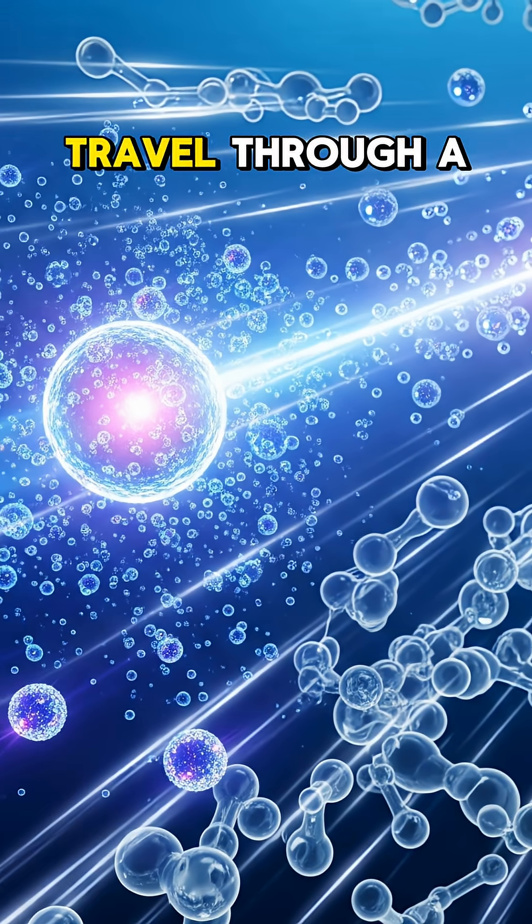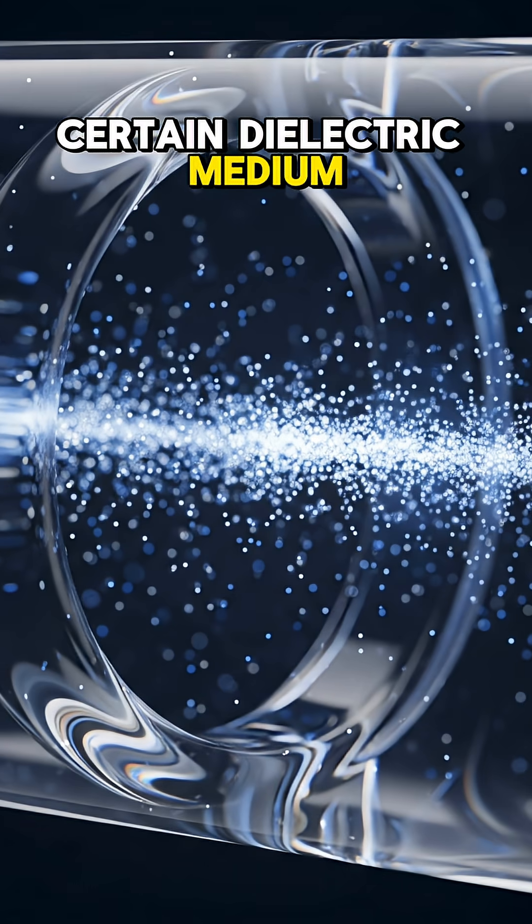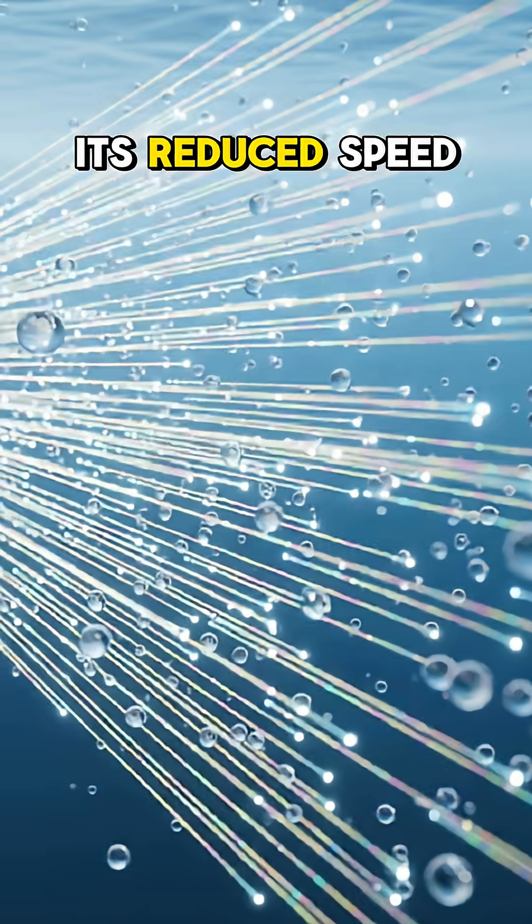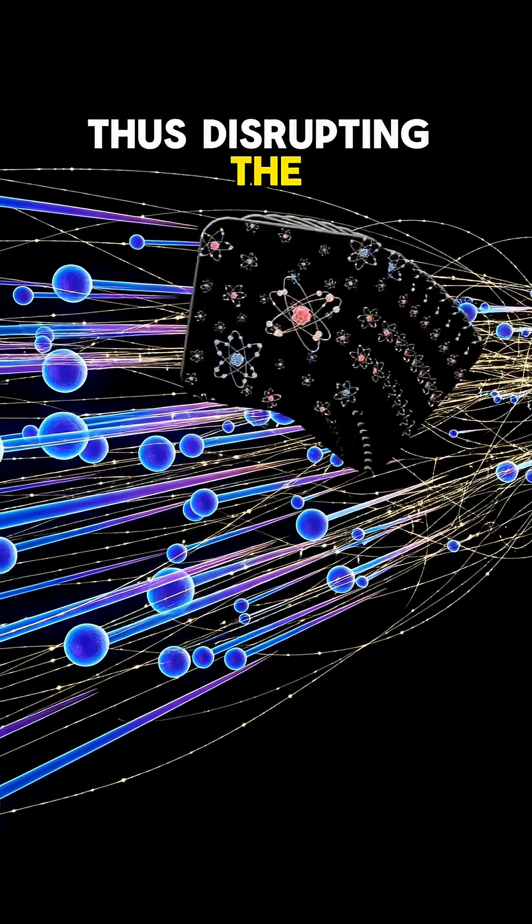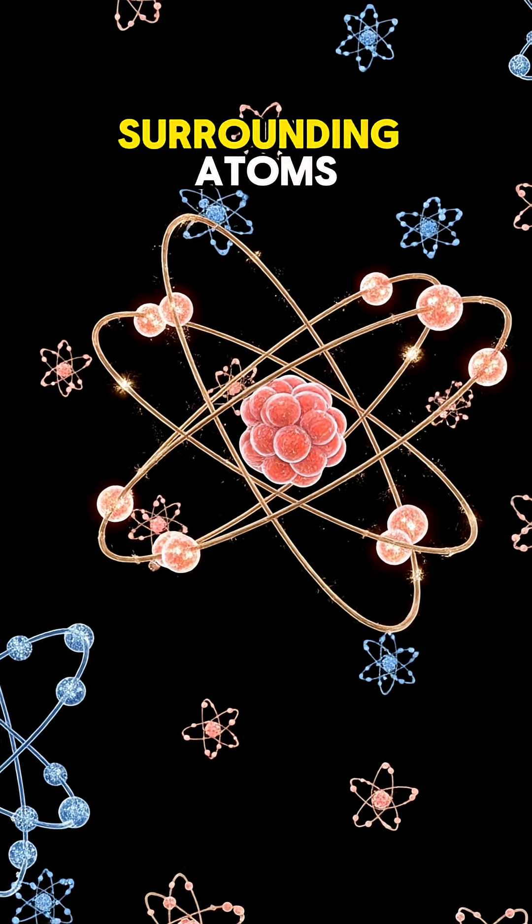Well, for this to take place, light needs to travel through a certain dielectric medium, such as water, and because of its reduced speed, other charged particles, such as electrons, now travel faster, thus disrupting the electromagnetic equilibrium of surrounding atoms.